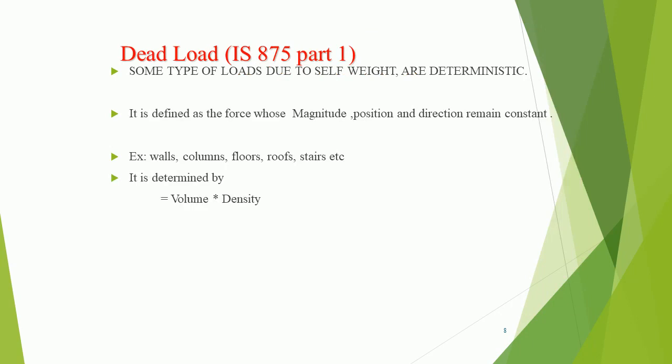Dead load as per IS 875 Part 1 — loads due to self-weight are deterministic. It is defined as a force whose magnitude, position, and direction remain constant. This includes walls, columns, floors, roofs, stairs, etc. Dead load is determined by the formula: load equals volume multiplied by density.